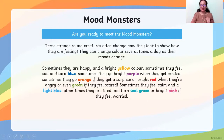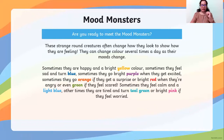Sometimes they go orange if they get a surprise — the monster will turn orange. And bright red when they are angry — the color will turn red. And green if they feel scared. So: scared is green, angry is red, surprise is orange, purple when excited, blue when sad, and yellow when happy.